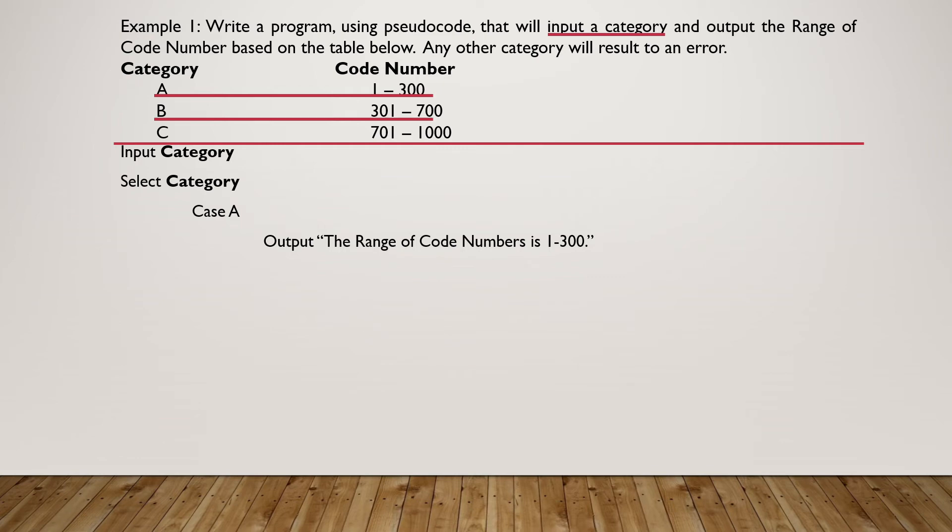If it's in the category B, then in case B, the range of code numbers is between 301 and 700. And for case C, we are going to output the range of code numbers between 701 and 1000. We also have been specified that for any other category, we should result to an error.